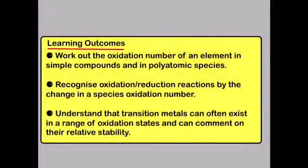By now, you should be able to work out the oxidation number of an element in both simple compounds and in polyatomic species. You should be able to recognise oxidation and reduction reactions by the change in the oxidation number of a species. And you should understand that transition metals can often exist in a range of oxidation states and be able to comment on their relative stability.